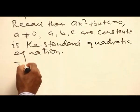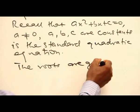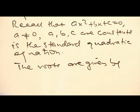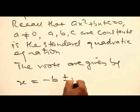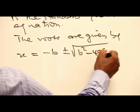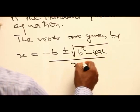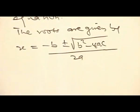The roots are given by the general formula: negative b plus or minus the square root of b squared minus 4ac, all over 2a.